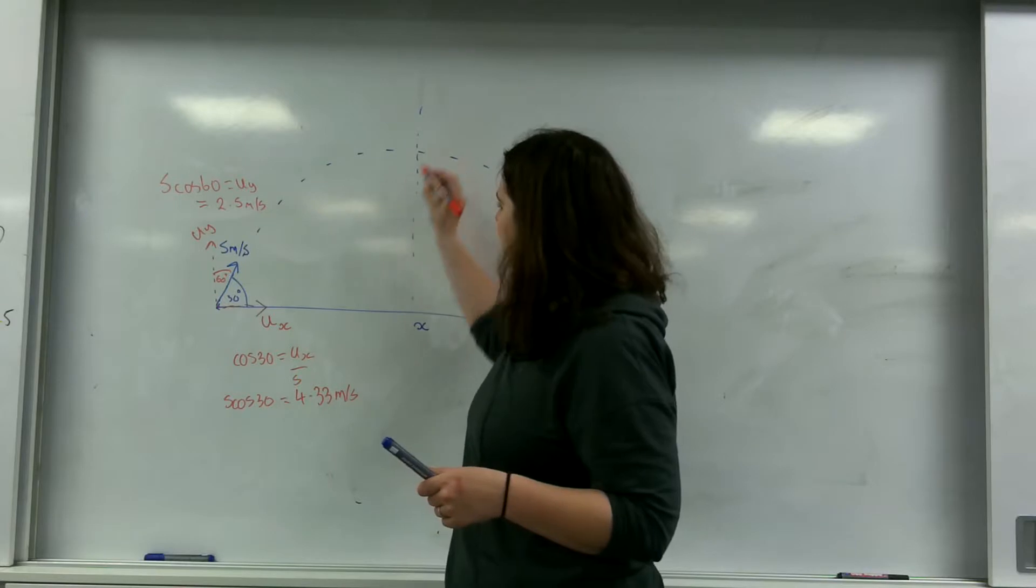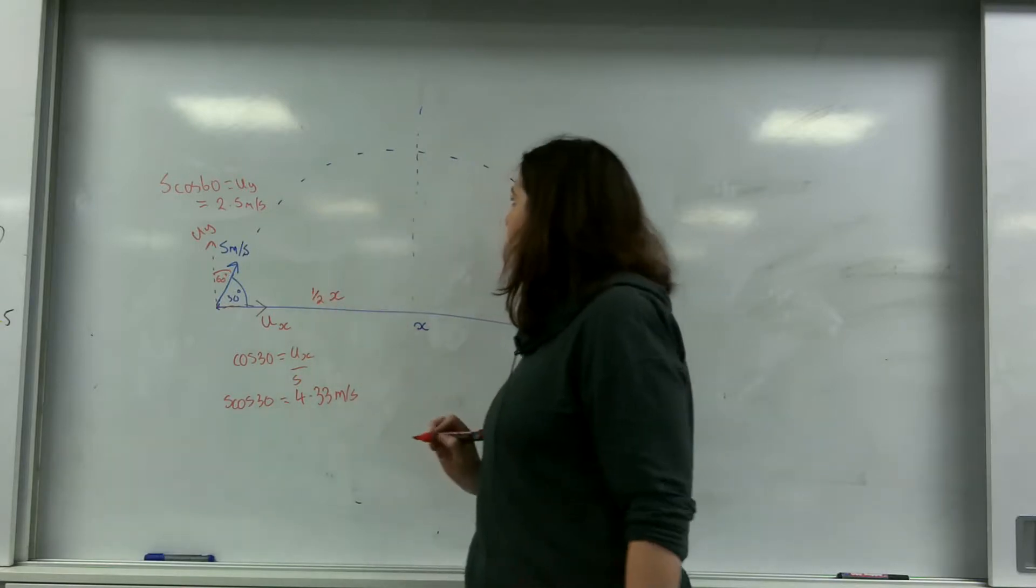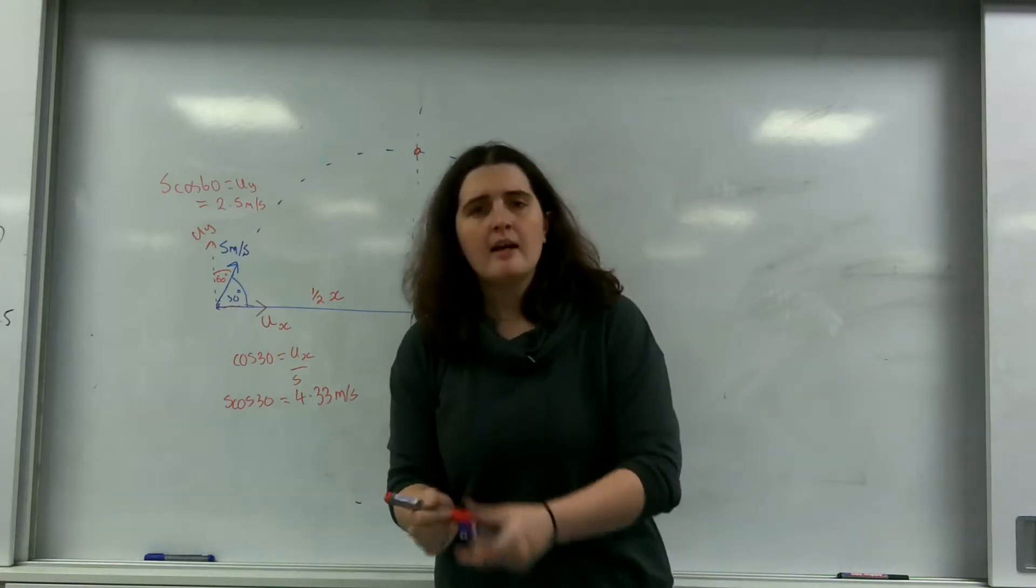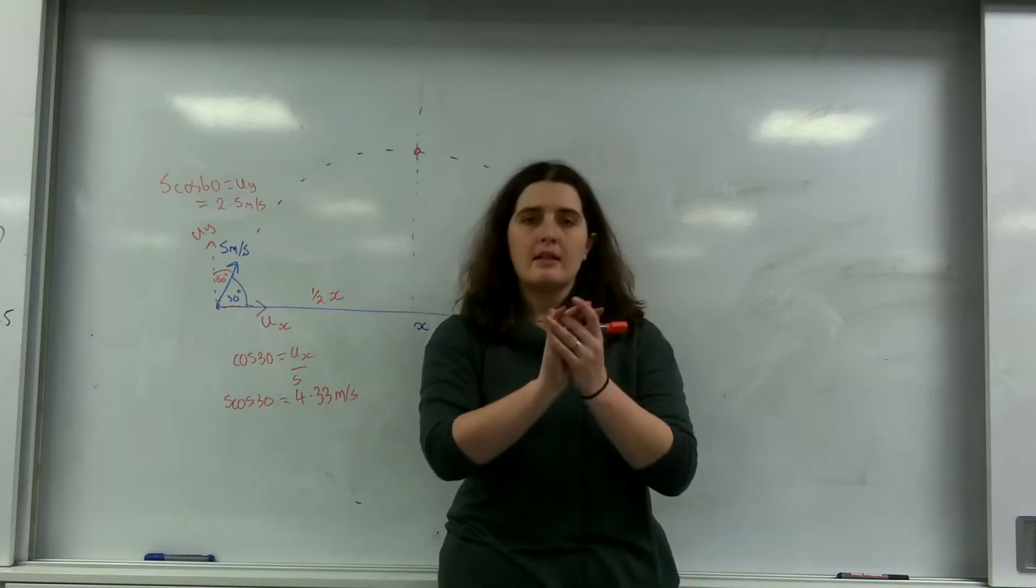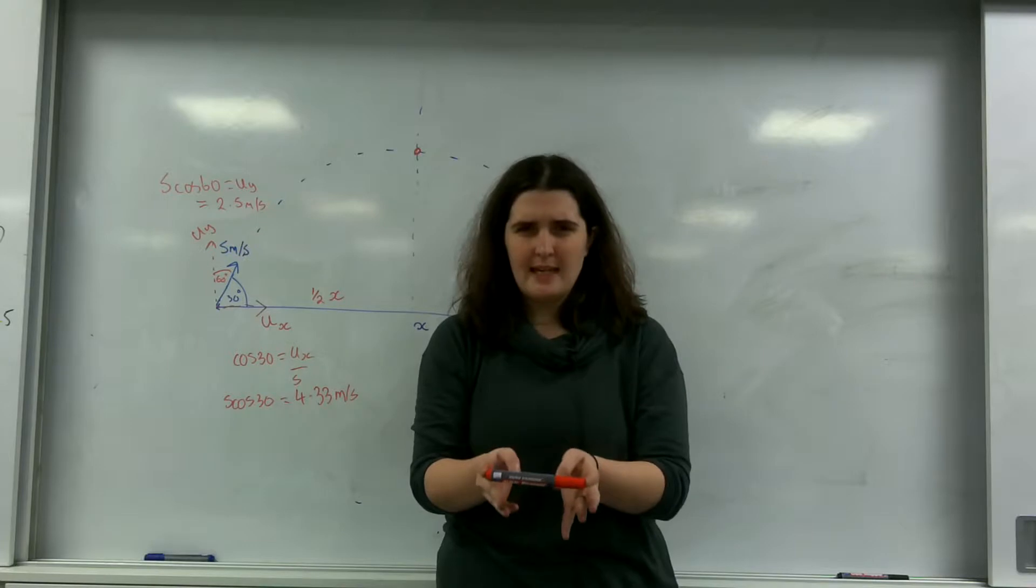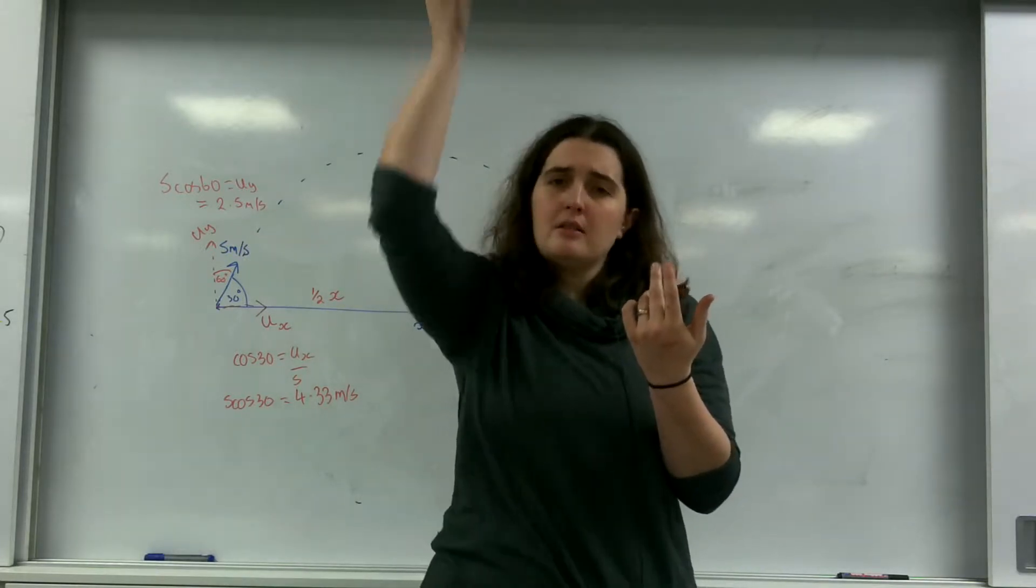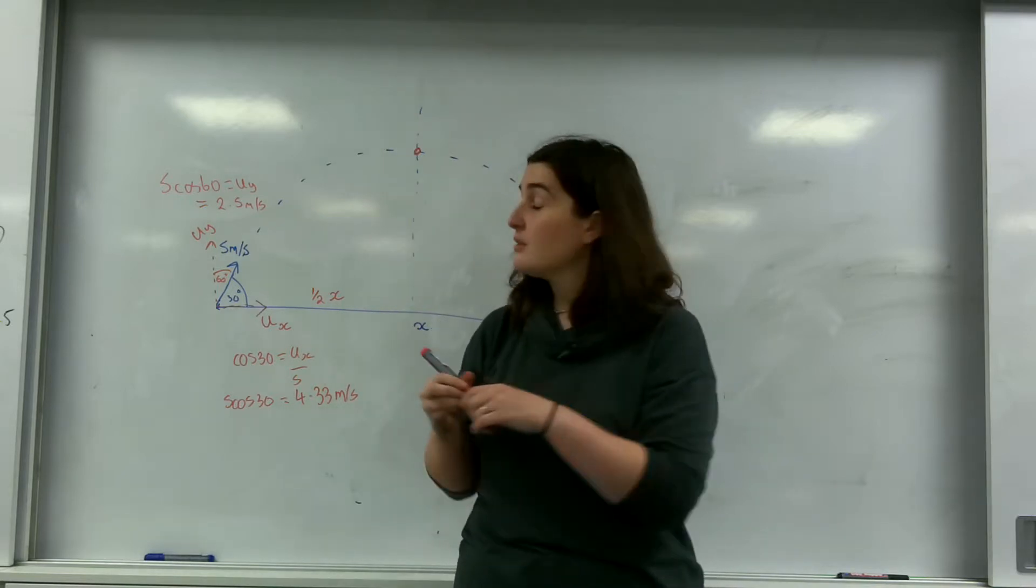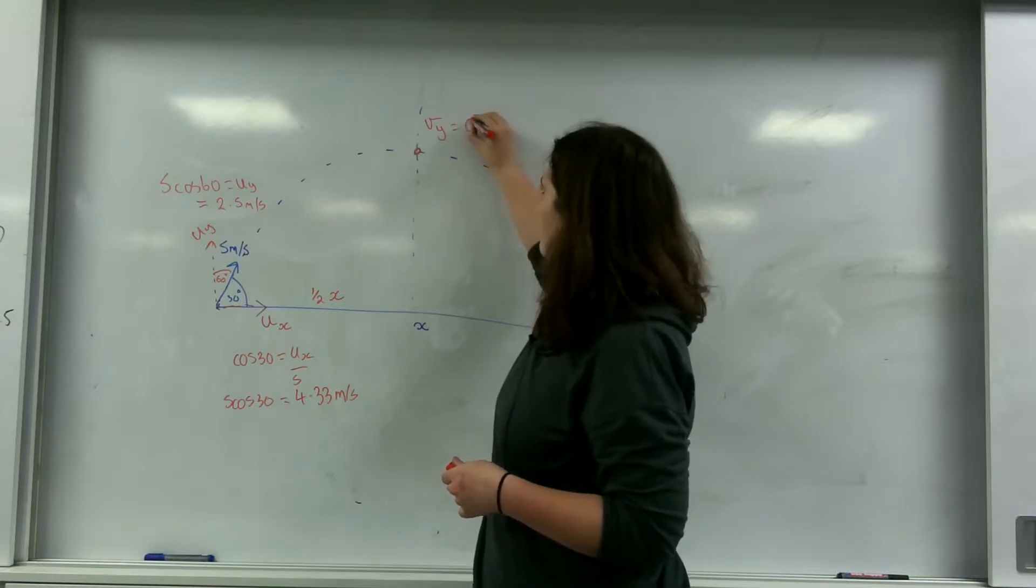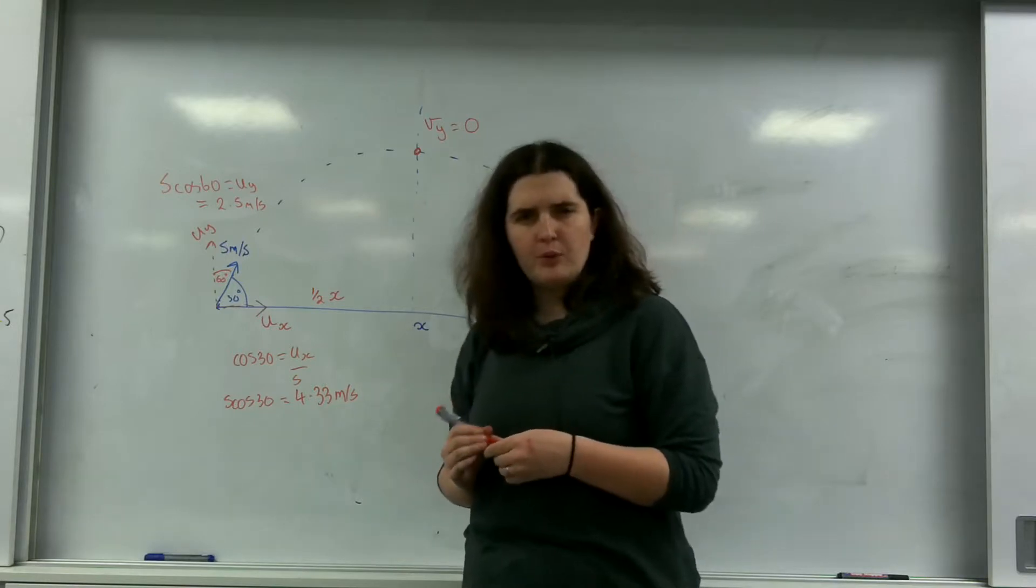So here, this would be a half x. But there's actually something really important that happens at the top. If I throw this up and then down, there is a point where my velocity is 0 because it stops moving up and then starts moving down again. So there's a point where my velocity is 0. And this is right at the top here. My velocity here in the y would be 0. And that's really important to take out.